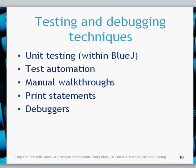Another method used very regularly is the manual walkthrough, where you actually walk through and design tests on paper — it's important to go through these tests initially. You may also have been using print statements throughout your programming, putting them in to find out exactly what's going on with the code. Another debugging technique is to use a debugger. As discussed previously, we have walked through the debugging in BlueJ — if you want to review that, have a look at chapter three. The debugger is an extremely useful tool once you start to reach any level of complexity.